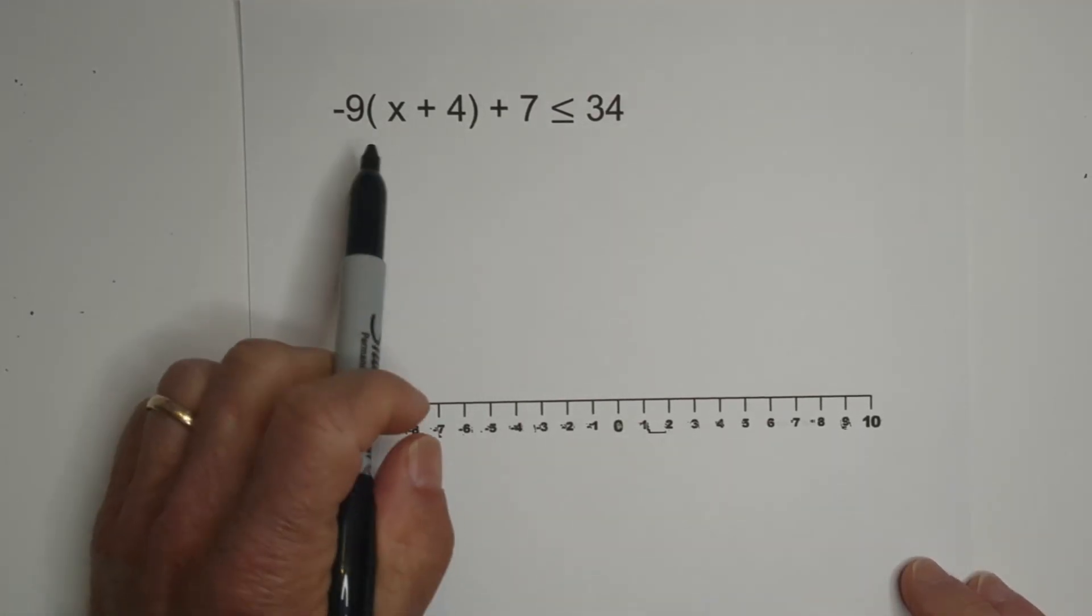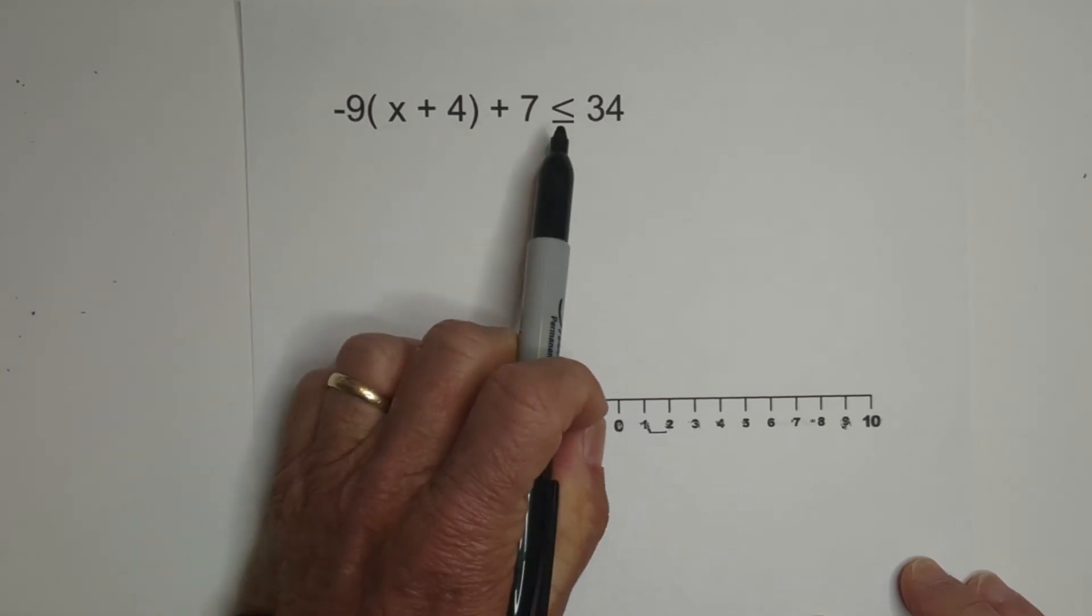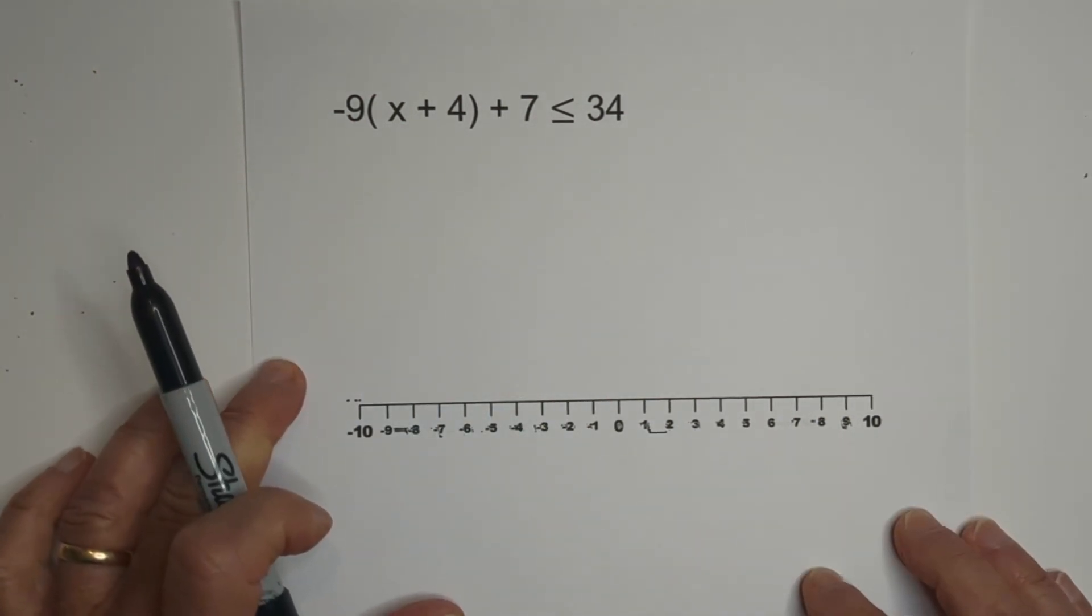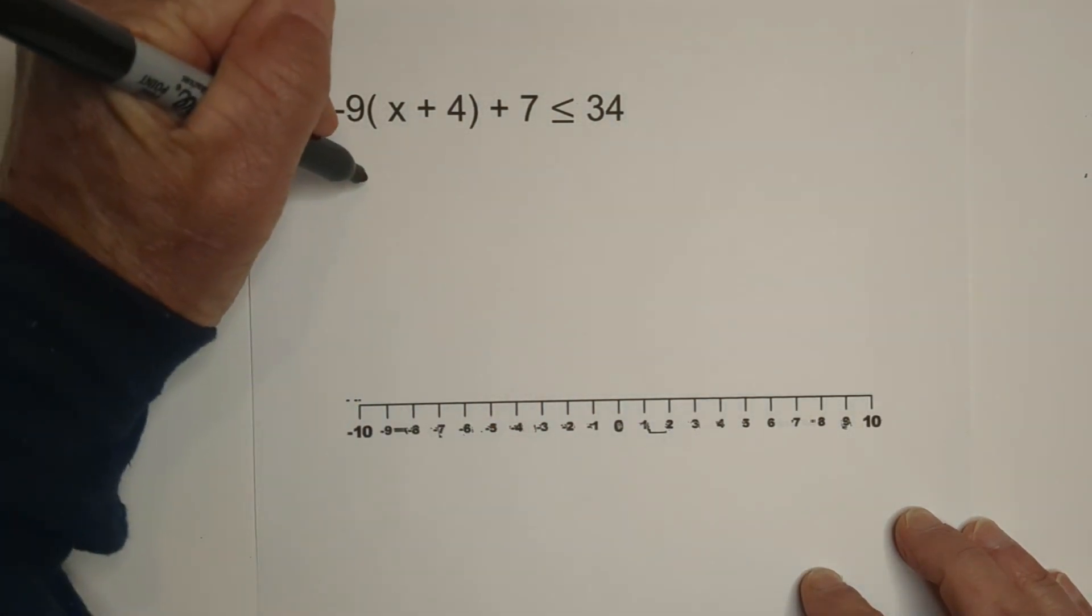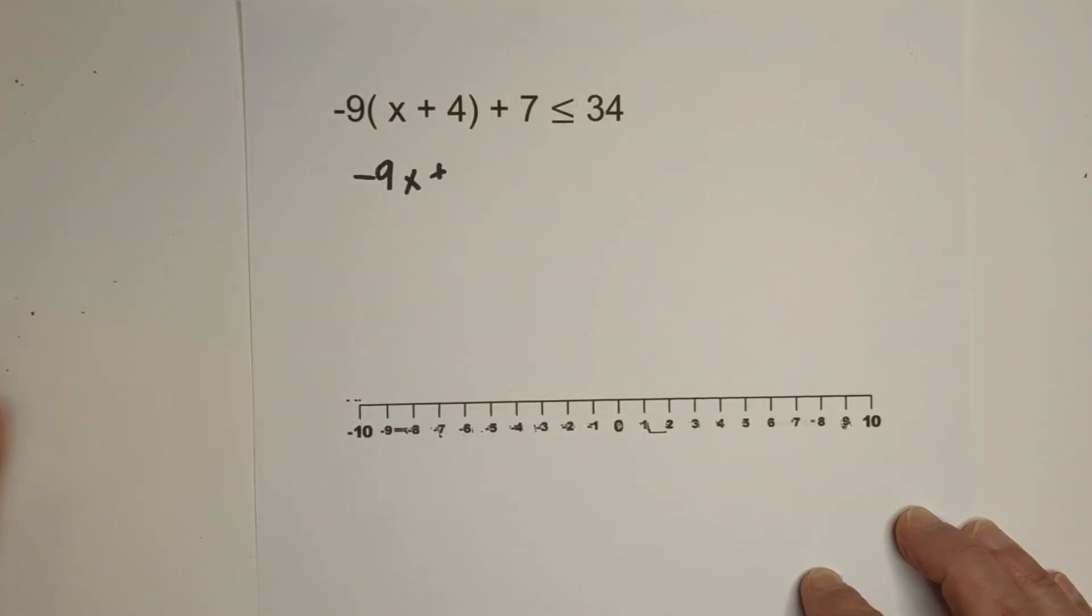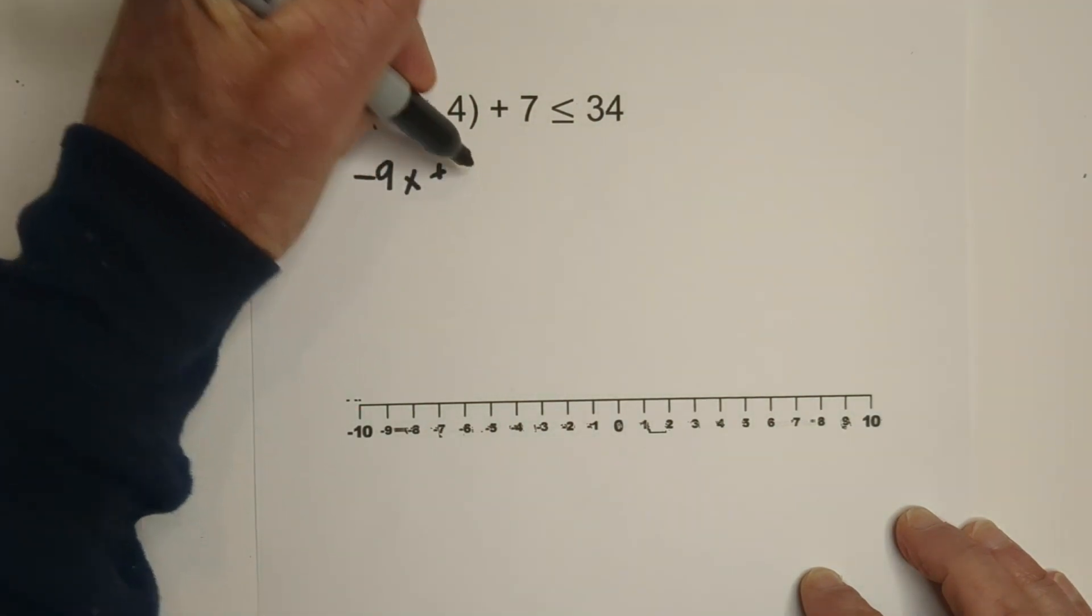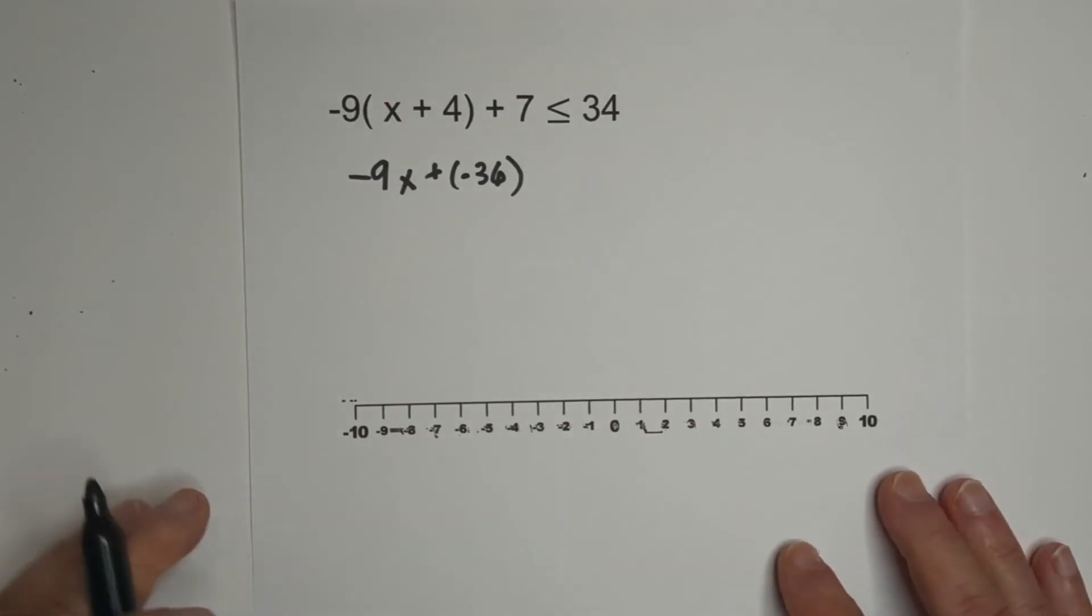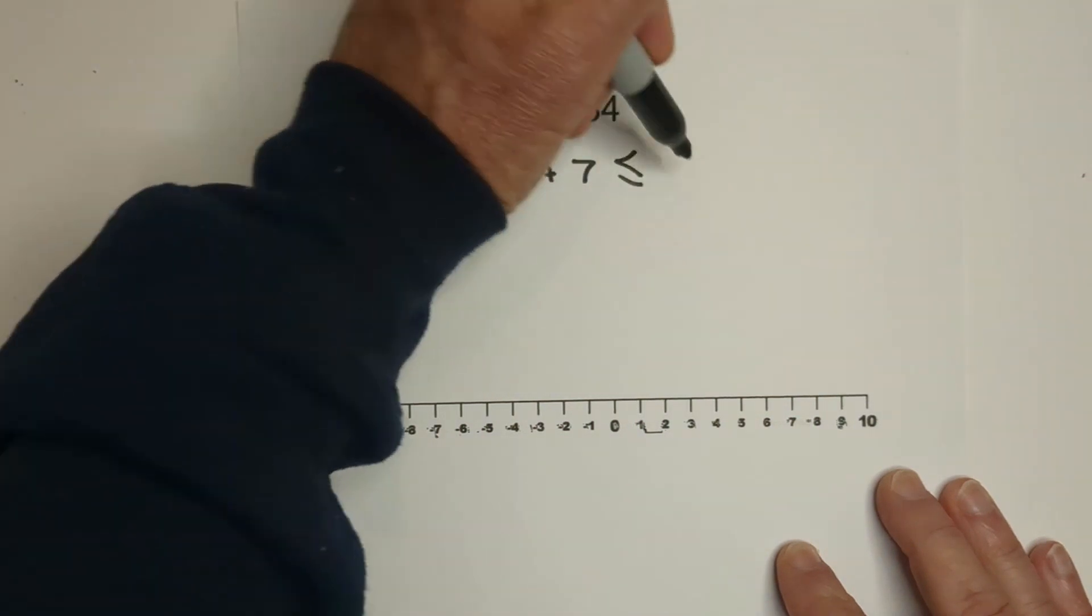Now with this one, it introduces one thing. Whenever you divide by a negative number, you need to flip the inequality sign. So let's work through it. First apply the distributive property, 9 times x, so it will be negative 9x plus 9 times 4, which is negative 36. Then we have plus 7 is less than or equal to 34.